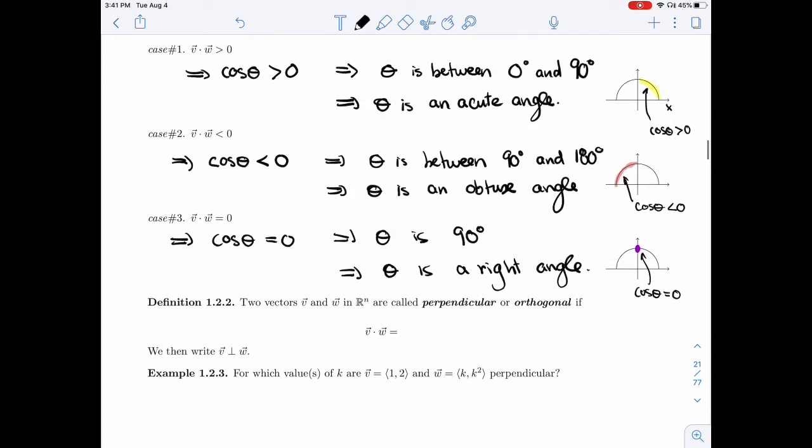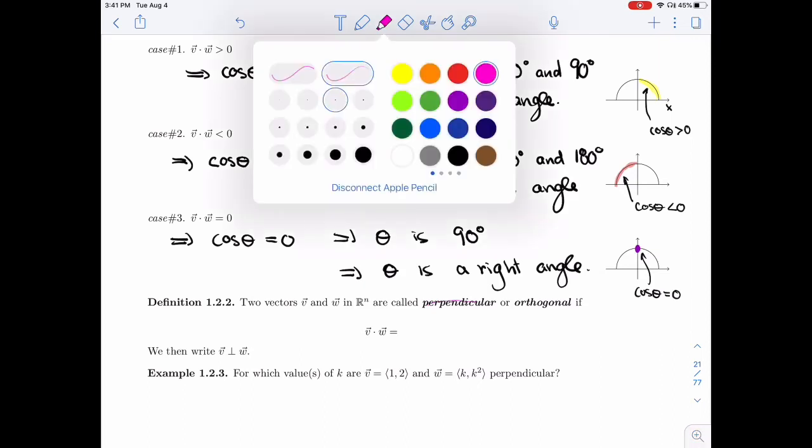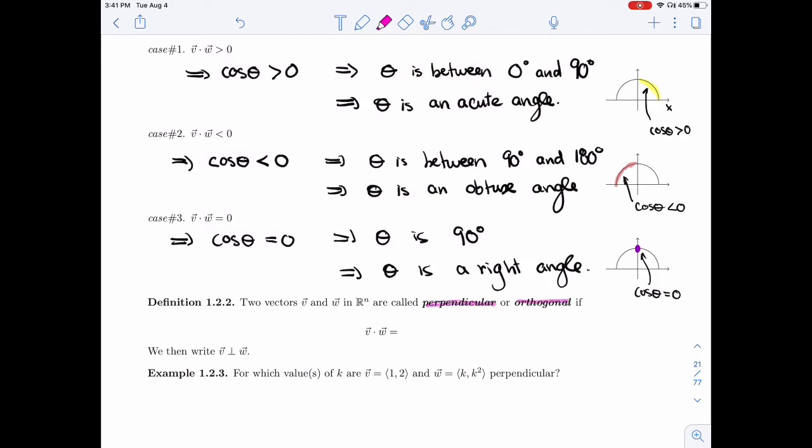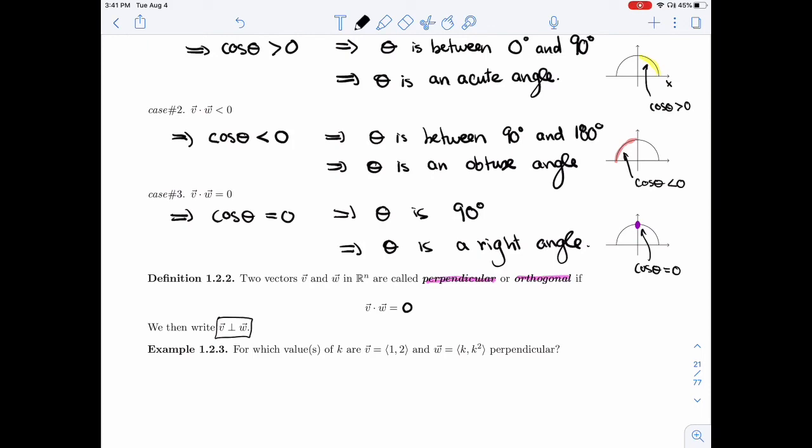Alright, so in the next definition, we'll use what we just did to define what it means for two vectors, V and W in R^n, to be perpendicular. They're going to be perpendicular or orthogonal if the angle is 90, so if the dot product is zero. And then we write V perpendicular to W with this little symbol here with this upside down T shape.